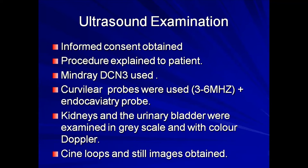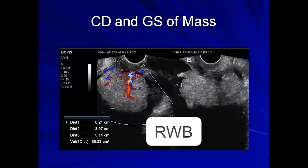The ultrasound exam used the Mindray DC-N3 from Shenzhen, China, with curvilinear probes of 3 to 6 MHz and an endocavity probe introduced rectally. Kidneys, ureters, and bladder were examined in grayscale and with color Doppler. Our first image shows a transverse section on the left and a longitudinal section on the right, which shows a hypoechoic mass with ill-defined margins.